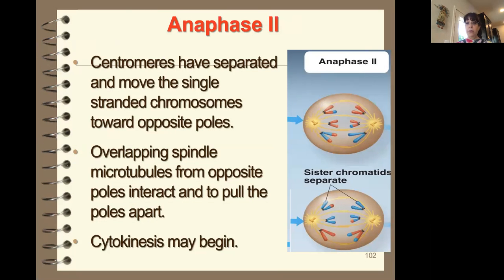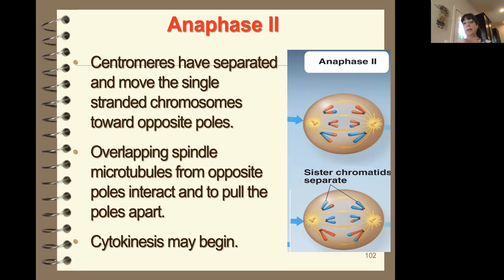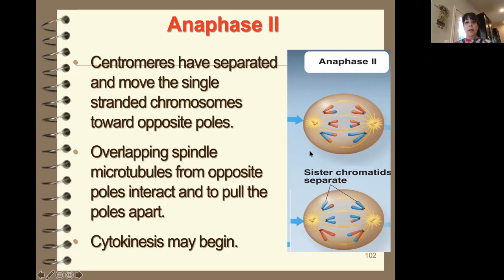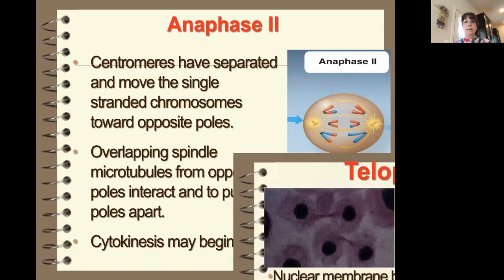The next phase is anaphase two — 'ana' means to separate, so the sisters separate. In the picture you can see prophase one where synapsis and crossing over occurred. You can see blue and red — red representing mom and blue representing dad — and you can see the crossing over has occurred. We have two cells because in stage one we created two cells, and in anaphase the sister chromatids separate.